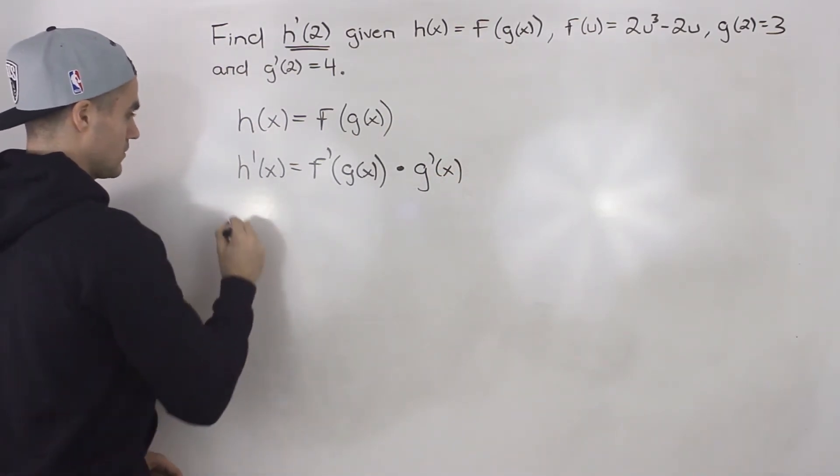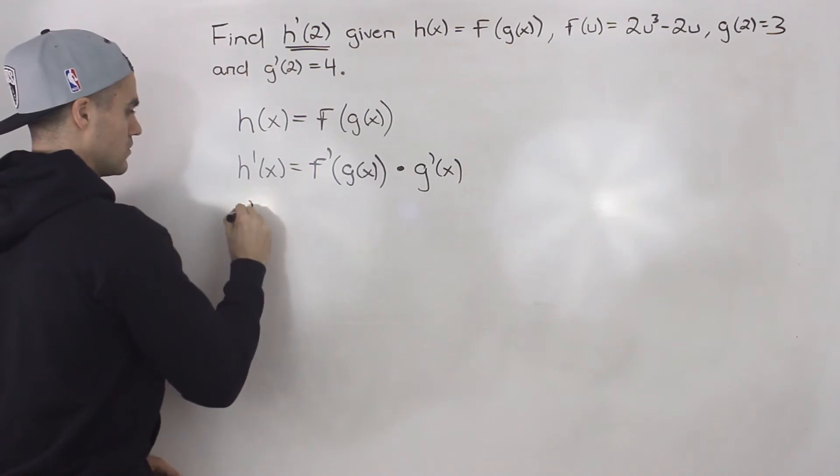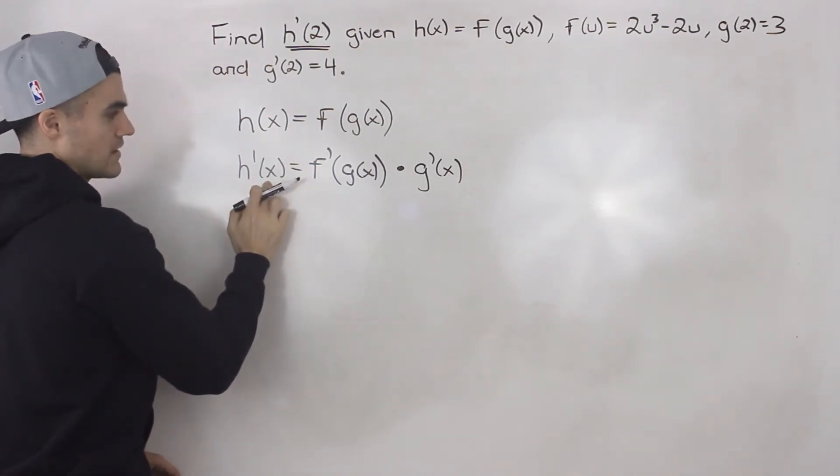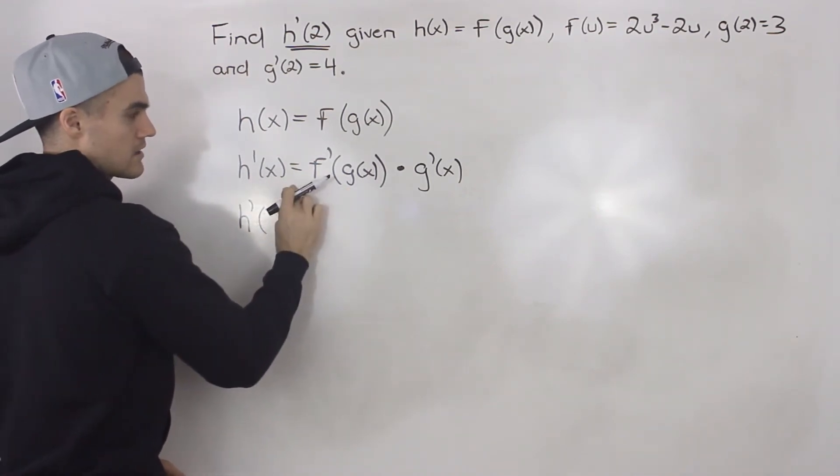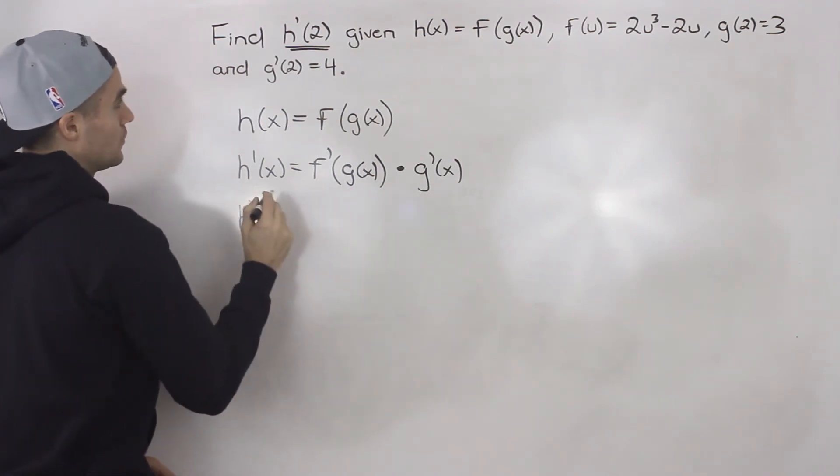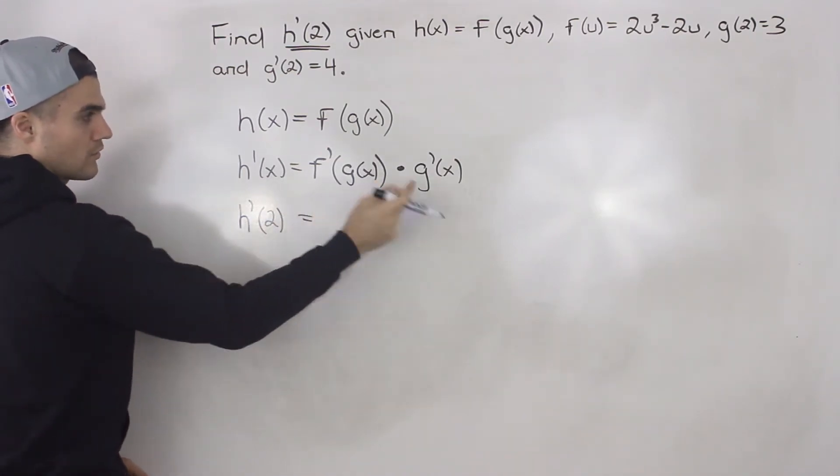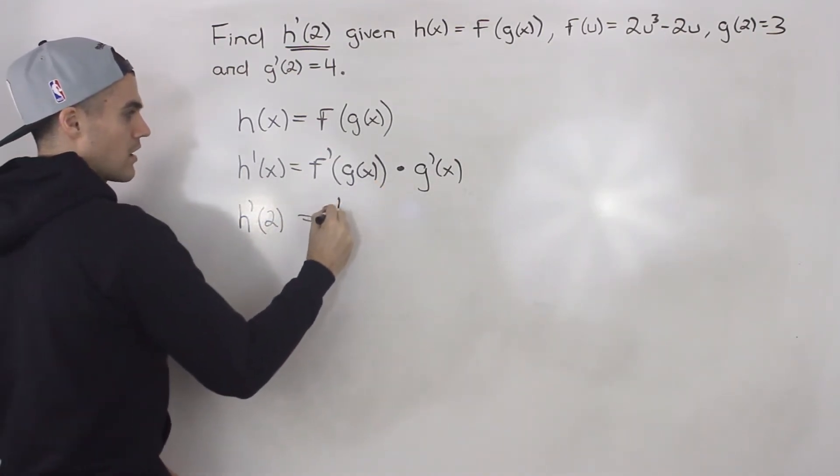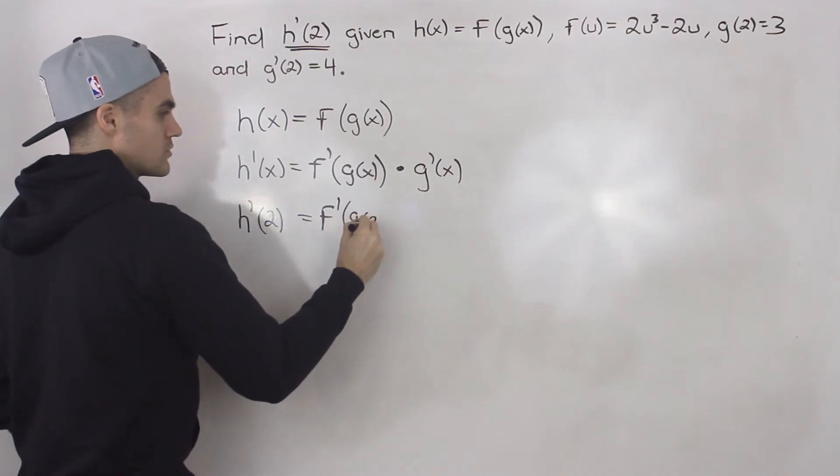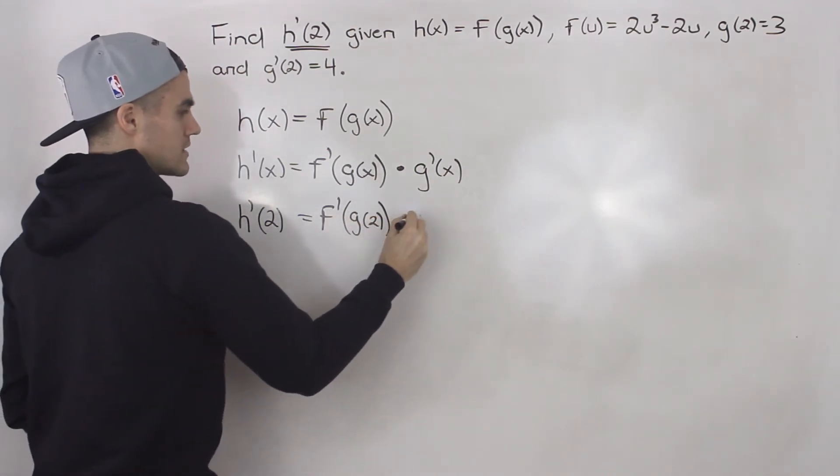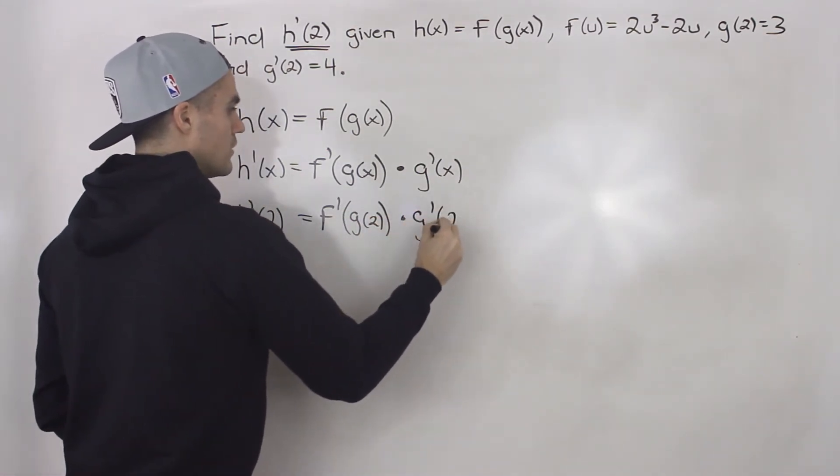Now since we have h'(x), or an expression for it, we can find an expression for h'(2). We would just plug in 2 for all the x values, so we'd have f'(g(2)) times g'(2).